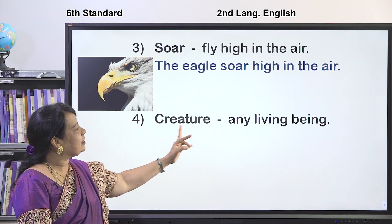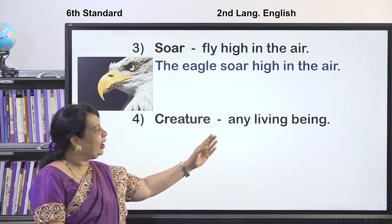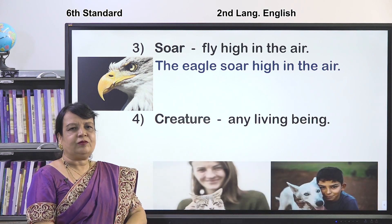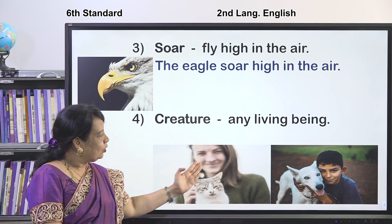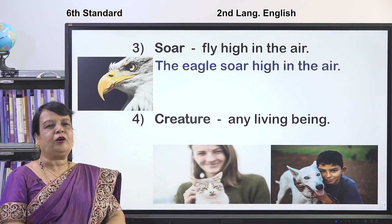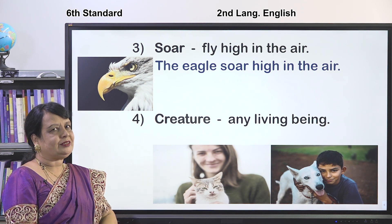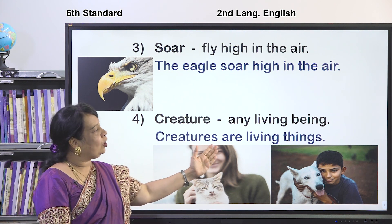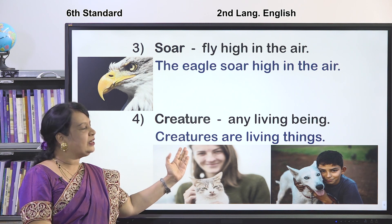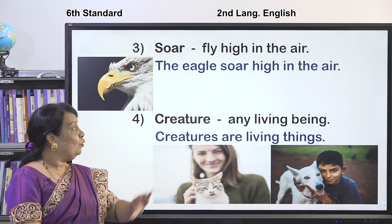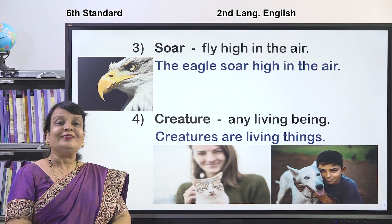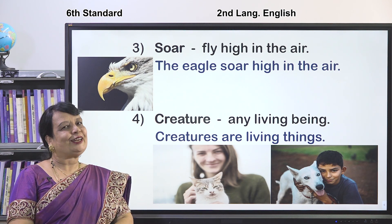The next word is creature — it means any living being. Any living being is called a creature. Human beings are also one type of animal. Creatures means living things. Now we are going to take all these four words and recite the poem.